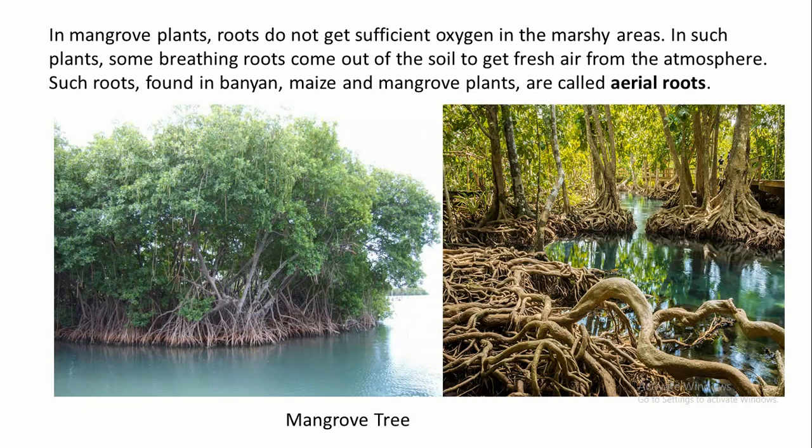In mangrove plants, roots do not get sufficient oxygen in the marshy areas. In such plants, some breathing roots come out of the soil to get fresh air from the atmosphere. Such roots, found in banyan, maize, and mangrove plants, are called aerial roots — roots that come out of the soil to get fresh air.